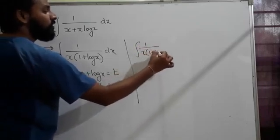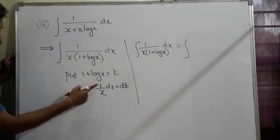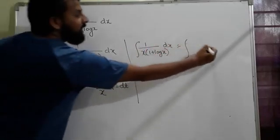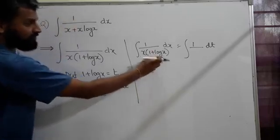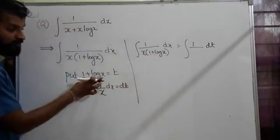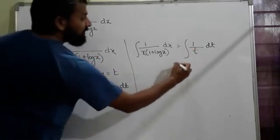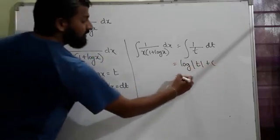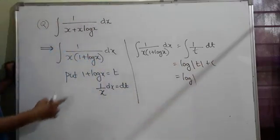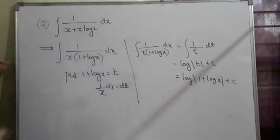Now I'll go for substitution. Very good guess: put 1 + log x = t. Differentiating: 1 is zero, derivative of log x is 1/x, so (1/x)dx = dt. We have 1/x dx here. The integration x/(1 + log x) dx equals ∫(1/x)/(1 + log x) dx.